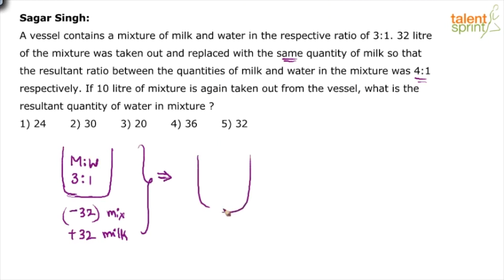So we will get a new mixture — let us call it M-dash to W-dash — and this ratio is 4 is to 1 after doing all this. Then again, 10 liters of mixture is removed from this. The question is: how much water is remaining?